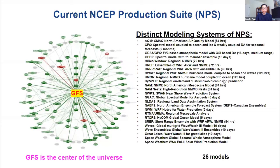This is a diagram showing the importance of the global forecast system. At NCEP, we have 26 different modeling suites, ranging from global, regional, hurricane, wave, and space weather. The GFS is in the center of the universe — all the other modeling suites are directly or indirectly related to the GFS.